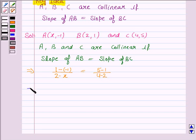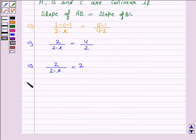And this implies 2 upon 2 minus x is equal to 4 upon 2. And this again implies 2 upon 2 minus x is equal to 2. And this implies 2 minus x is equal to 1. And this implies x is equal to 1.